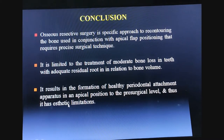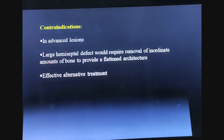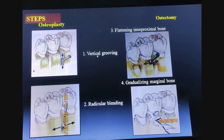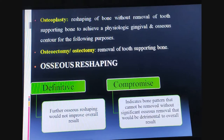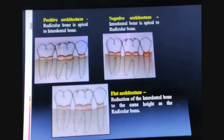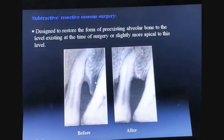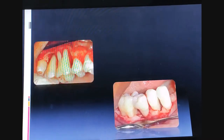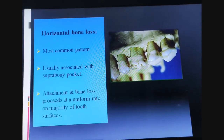To conclude, the four key steps to learn are osteoplasty and osteotomy: vertical grooving, radicular blending, flattening of interproximal bone, and gradualizing marginal bone — along with their indications, contraindications, advantages, and disadvantages. Osteoplasty, osteotomy, and osseous resective surgery are commonly asked questions. Fenestration and dehiscence, due to positional changes of the root, and the two basic types — additive and subtractive — are essential concepts.